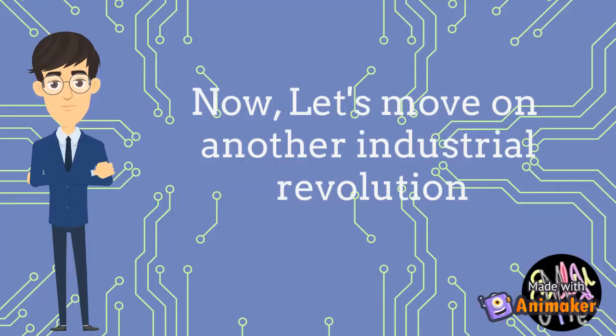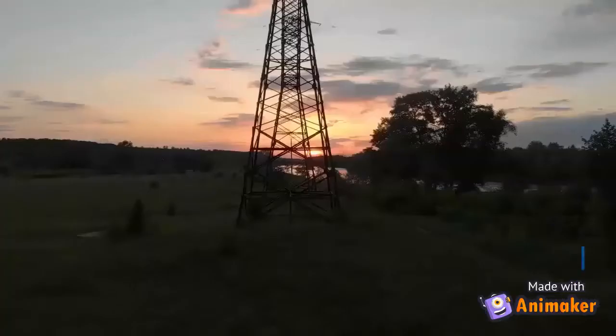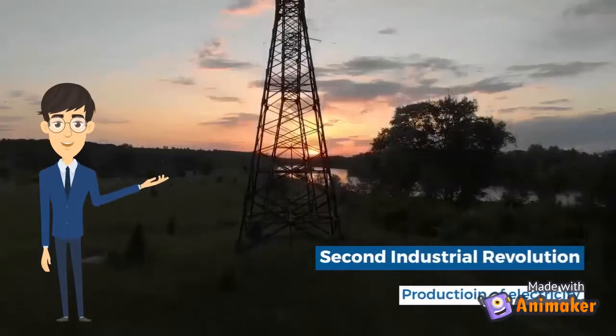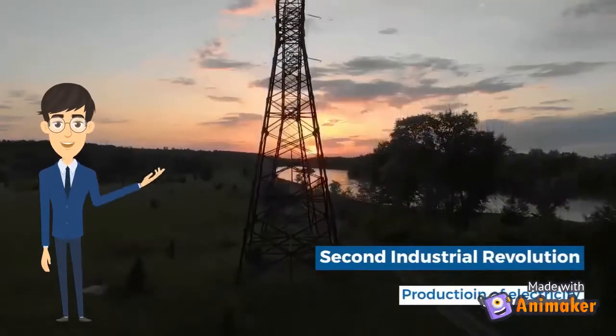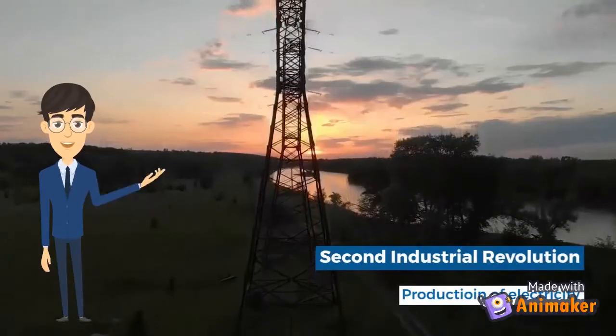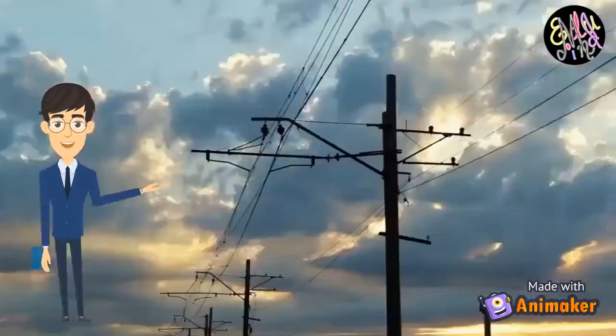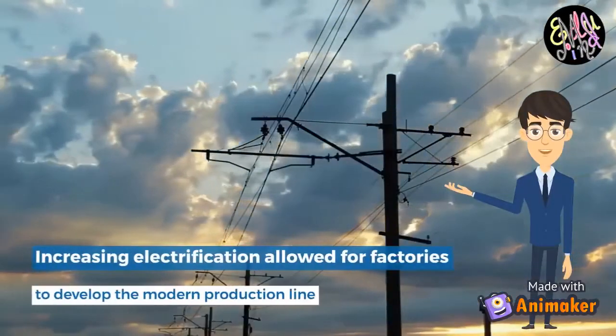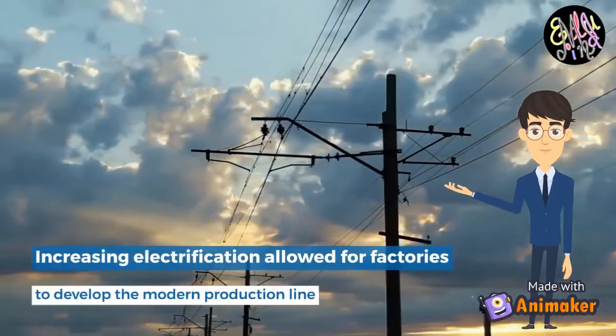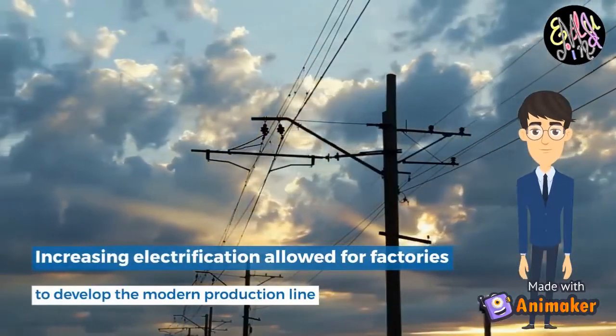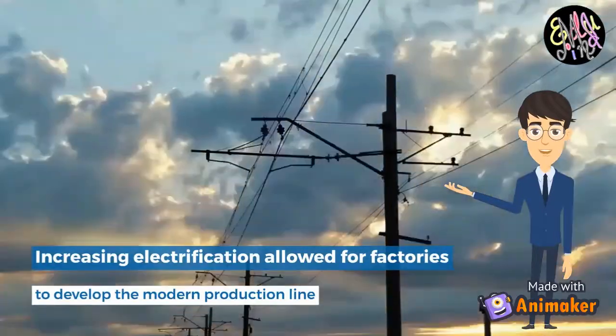Now let's move on to another industrial revolution. The Second Industrial Revolution is also known as the technological revolution. It was the period between 1871 and 1914. Electricity and increasing electrification allowed factories to develop the modern production line. It was a period of great economic growth.